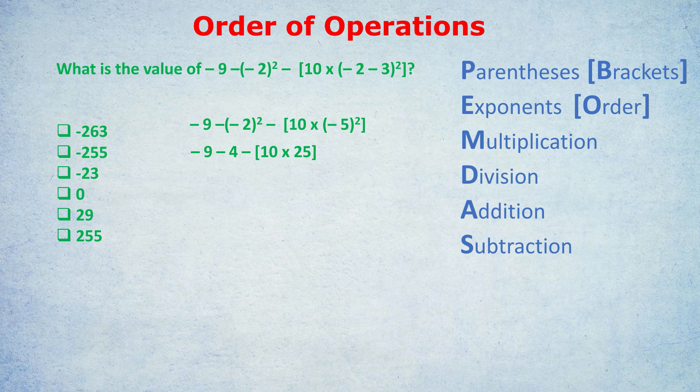Now multiplication: 10 times 25 = 250. This leaves us with negative 9 minus 4 minus 250. Working through the addition and subtraction gives us negative 263. The key structure to follow is PEMDAS in exact order: don't get distracted by multiplications before finishing exponents, or by subtractions before finishing division. As a bonus, once you understand order of operations you can confidently answer those tricky math problems that circulate online where everyone argues about the answer.